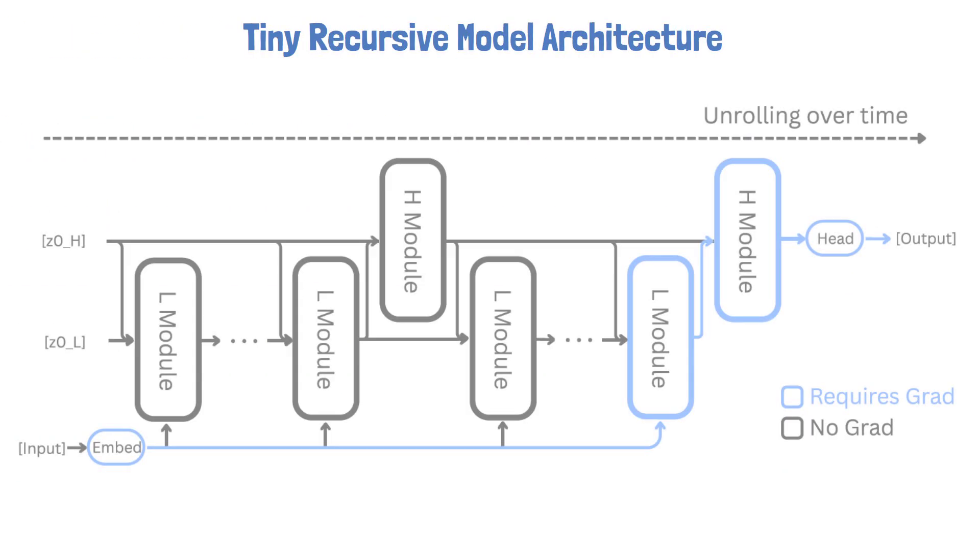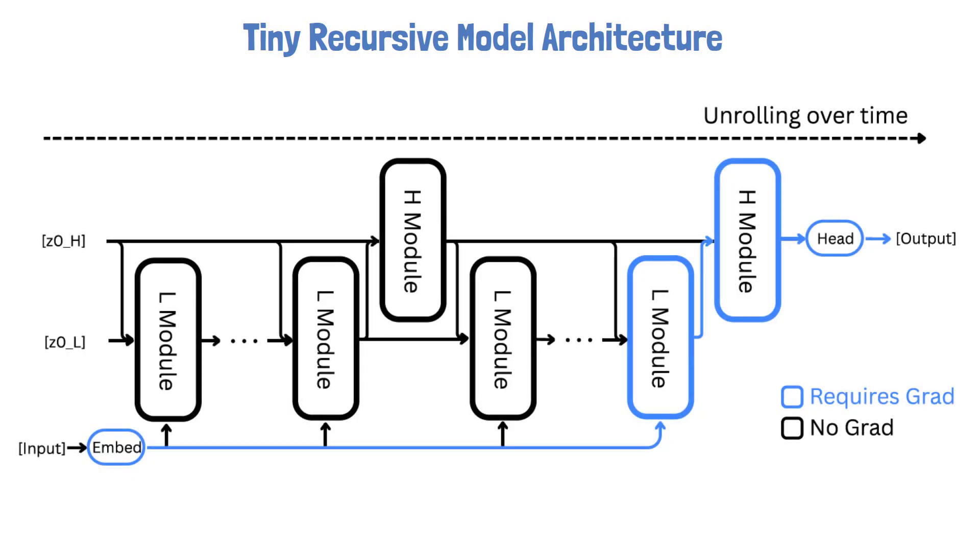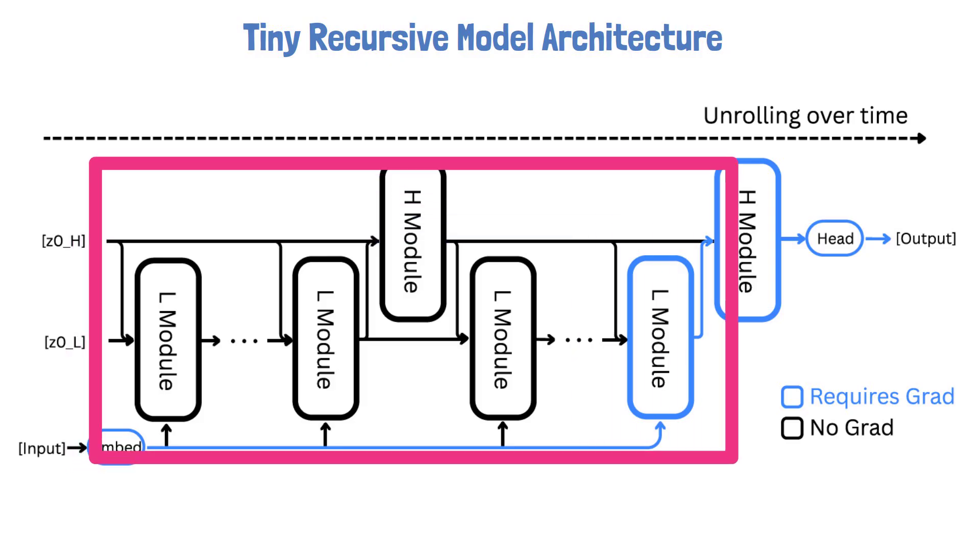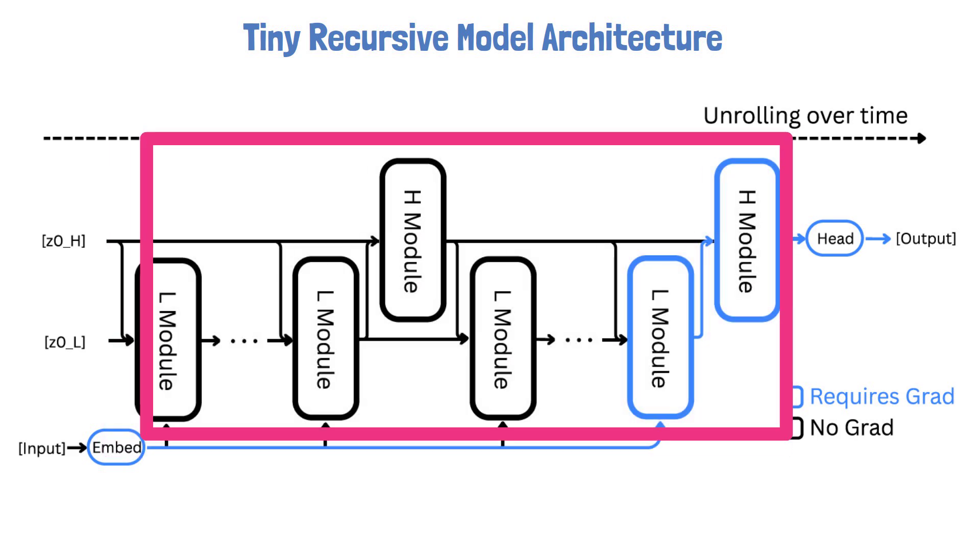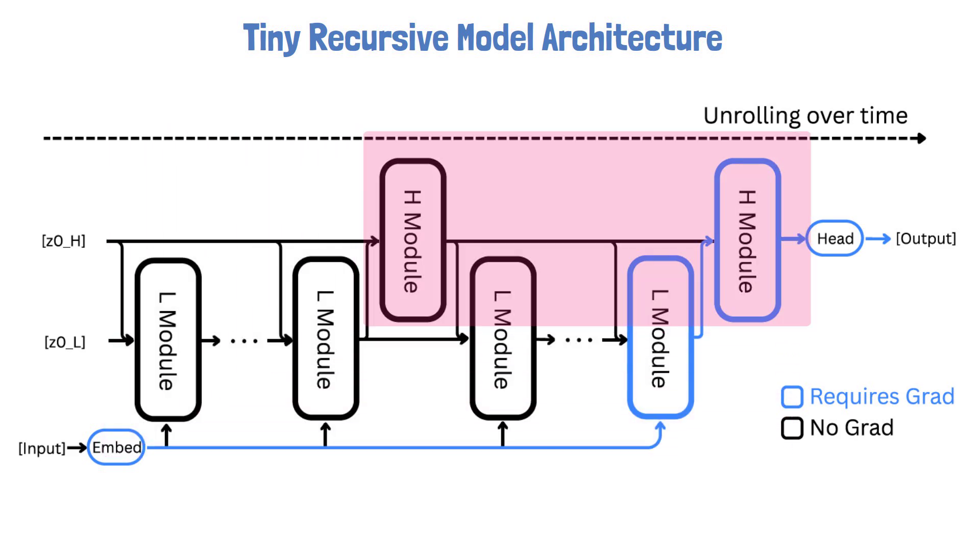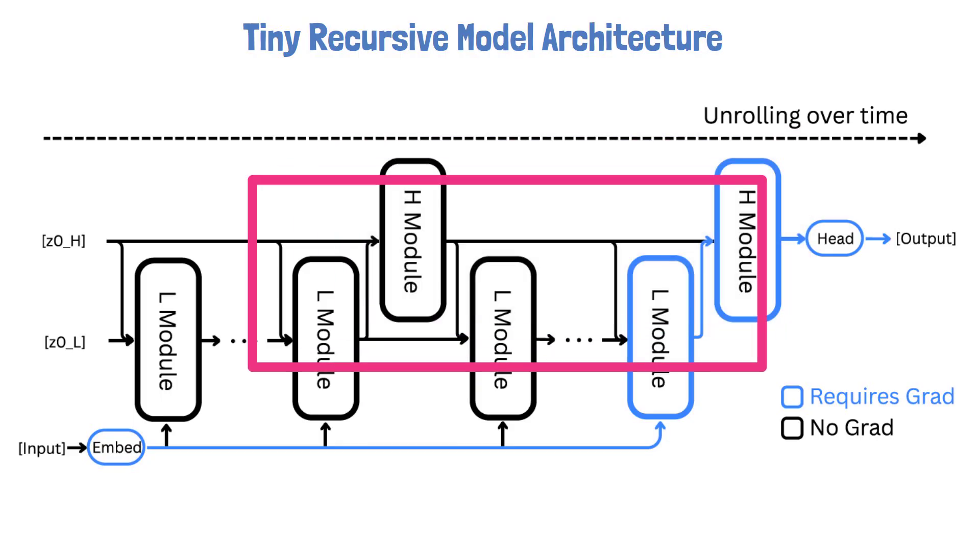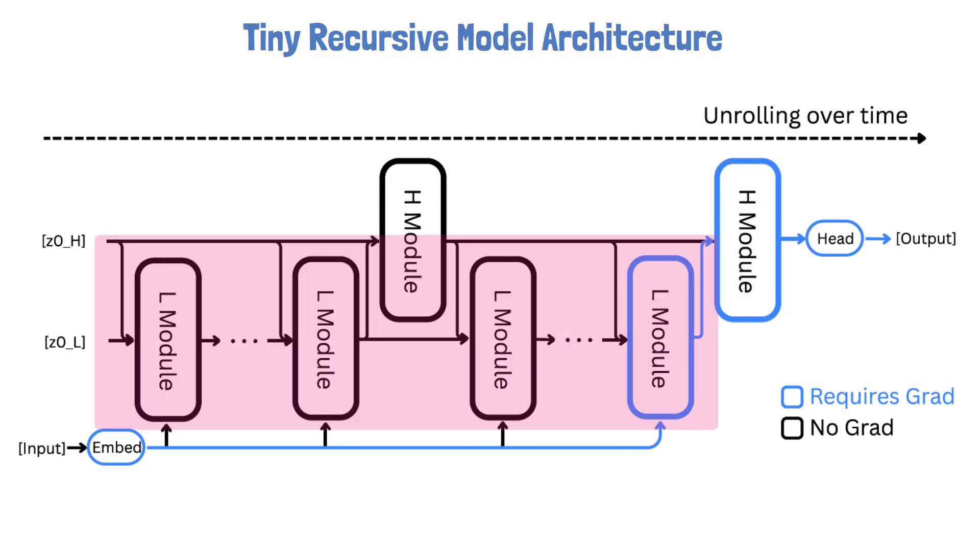So how does it actually work? Let's look at the architecture. Let's start with the Hierarchical Reasoning Model diagram since the idea is similar. First, the input goes through a trainable embedding layer which turns it into a representation the model can work with. The Hierarchical Reasoning Model uses two coupled recurrent modules working together at different time scales and uses an analogy where the high-level module is the planner and the low-level module is the doer. The high-level module handles abstract reasoning and sets the overall direction, while the low-level module runs fast, detailed computations to follow the high-level plan and work out the specifics. While this analogy helps to understand the overall idea, it may not be an entirely correct interpretation.